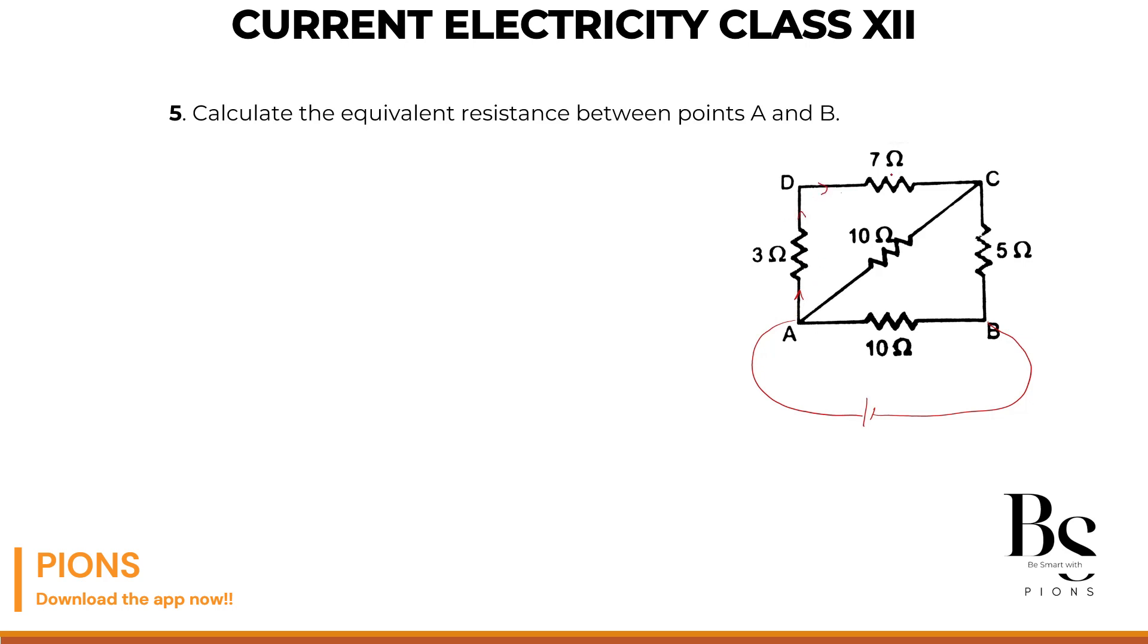Same current goes to this 7 ohm. So this 3 ohm and 7 ohm, they both are in series. So if you simplify it, it will be 3 and 7 which is 10.